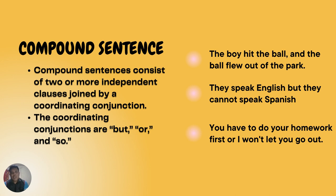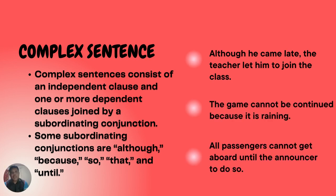The next sentence type is the complex sentence. A complex sentence consists of an independent clause plus a dependent clause. This type of sentence comprises at least a dependent clause which starts with a subordinating conjunction or a relative pronoun, and contains a subject and verb but doesn't express a complete thought. Some subordinating conjunctions include: 'although,' 'because,' 'so that,' and 'until.'